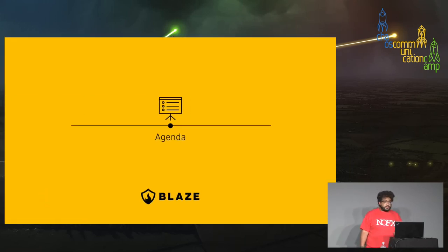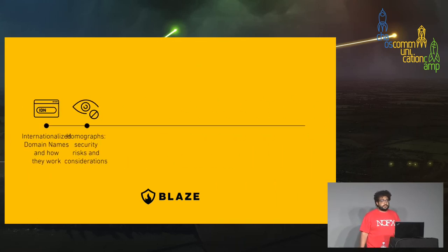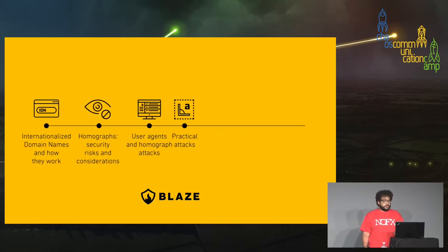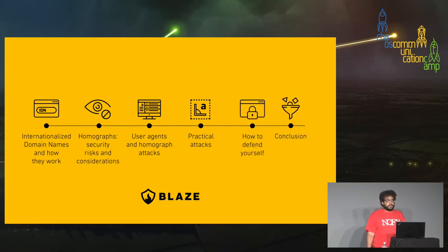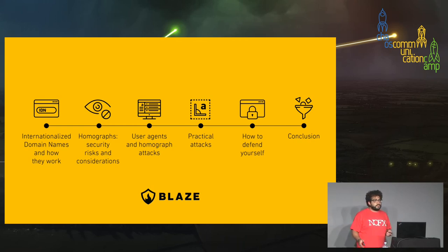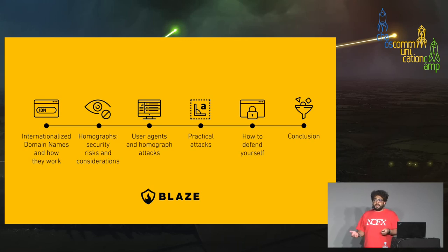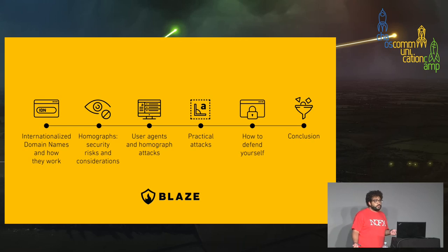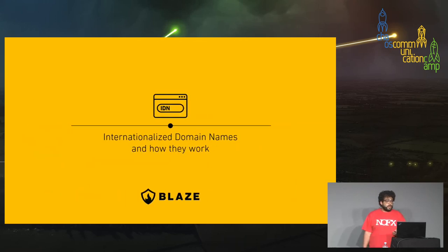Here's a quick agenda. We start by speaking about internationalized domain names, how they work and how they can be registered. Then we move on to talk about homographs and the associated security risks. We explore how user agents like browsers react to homograph attacks, show some practical attacks, discuss how we can defend ourselves, and then wrap up the talk.